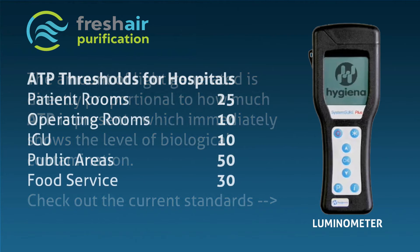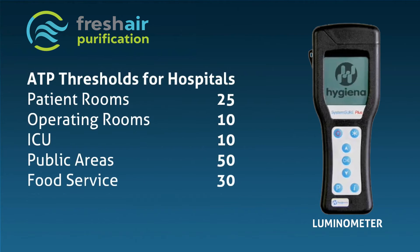Check out these current standards for ATP thresholds in hospitals: patient rooms are at 25, operating rooms are at 10, ICUs are at 10, public areas are at 50, while food service levels are at 30.